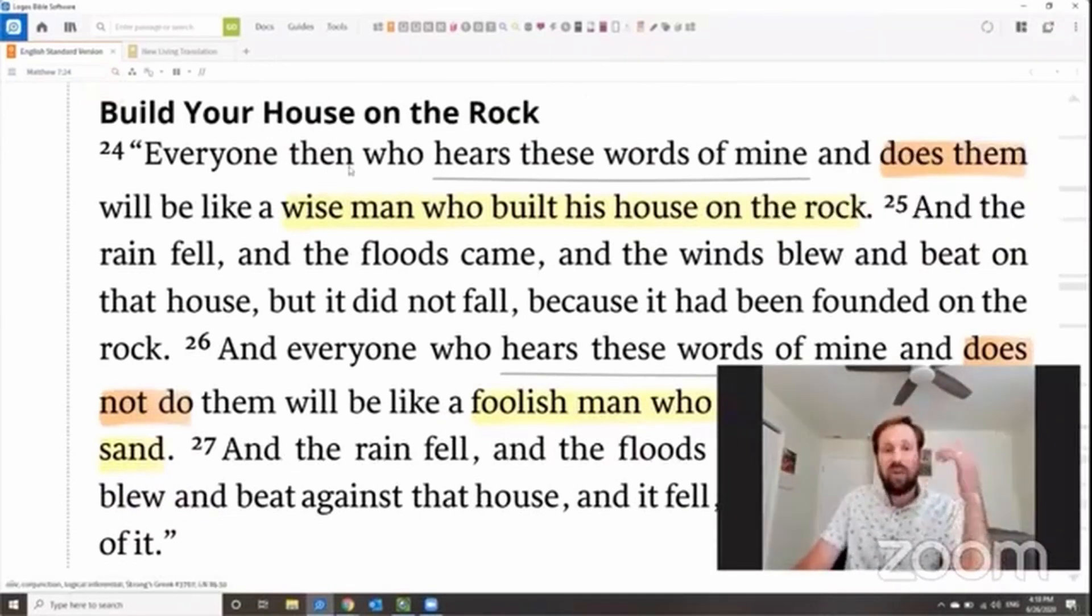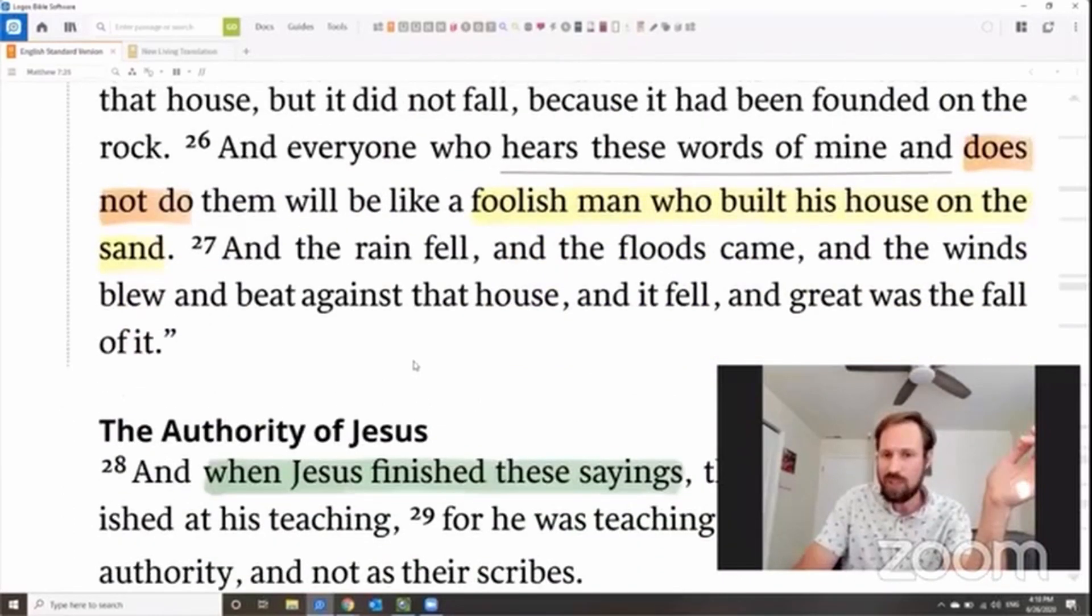Every one then who hears these words of mine and does them will be like a wise man who built his house on the rock. The rain fell, the floods came, the winds blew and beat on that house, but it did not fall because it was founded on the rock. And yet everyone who hears these words of mine and does not do them, looking at the Pharisees, that person will be like a foolish man who built his house on the sand. The rain fell, the floods came, the wind blew against that house, and it fell. And great was the fall of it.